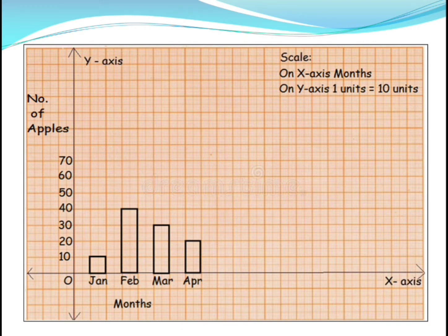You will also get questions from the bar graph — which month apples were sold higher, which month is lower, or how many apples are sold in the month of March? In that way you might get questions. So looking at the bar graph, you can write the answers easily.